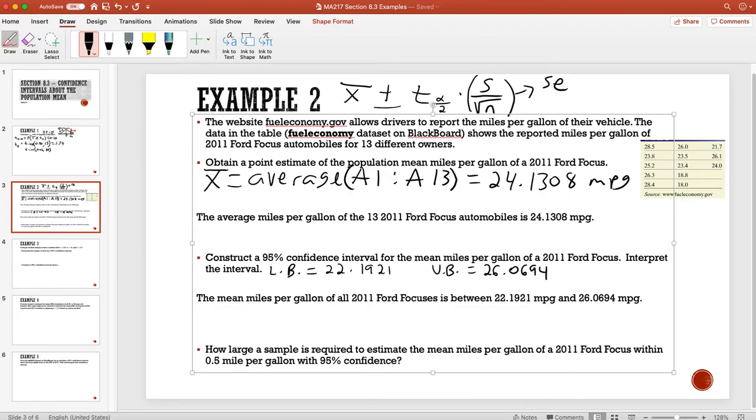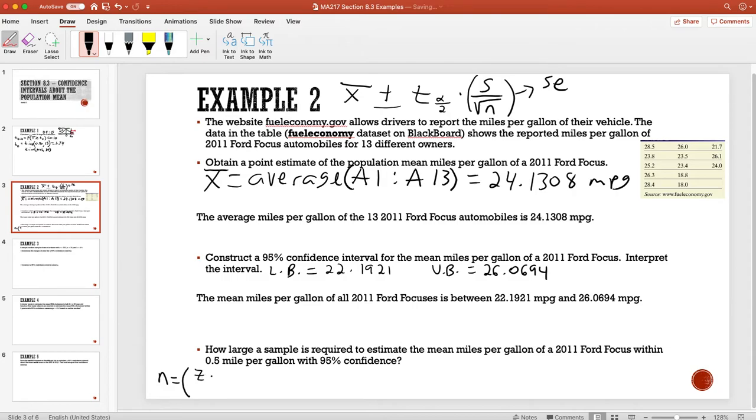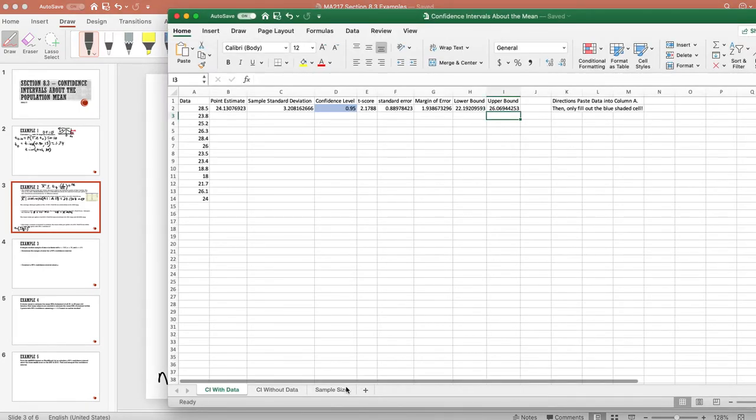Since we do not know that sample size, this particular value is given by this equation. This takes instead of the critical T value, which is what the confidence interval used, we are going to use the Z score at alpha divided by 2 times the sample standard deviation divided by the margin of error, and we are going to square that. Or we could just use the template that I have, which has a spot for sample size.